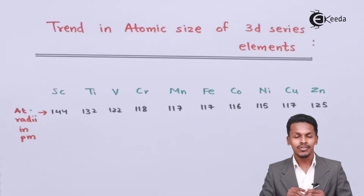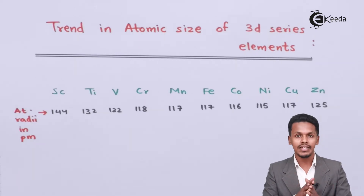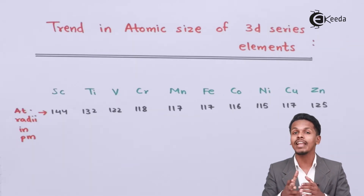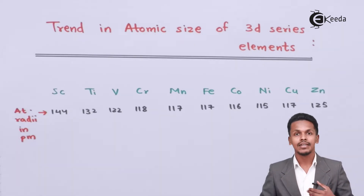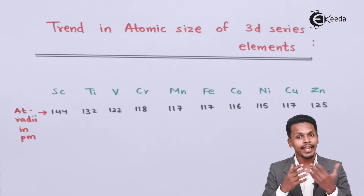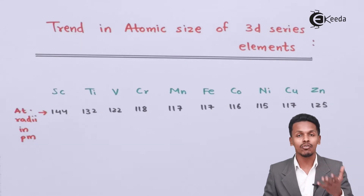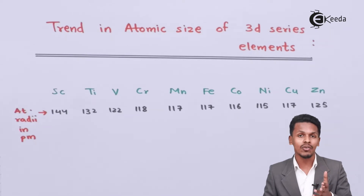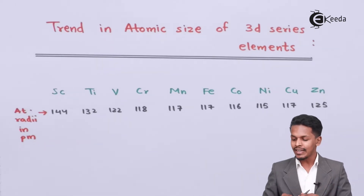During the filling of electrons in d block elements, the last extra electron enters the n-1 d orbital, that is the 3d orbital. Every element in the 3d series has a 4s orbital with 2 electrons — except chromium and copper which have one electron each in 4s — and the last electron enters the 3d orbital.